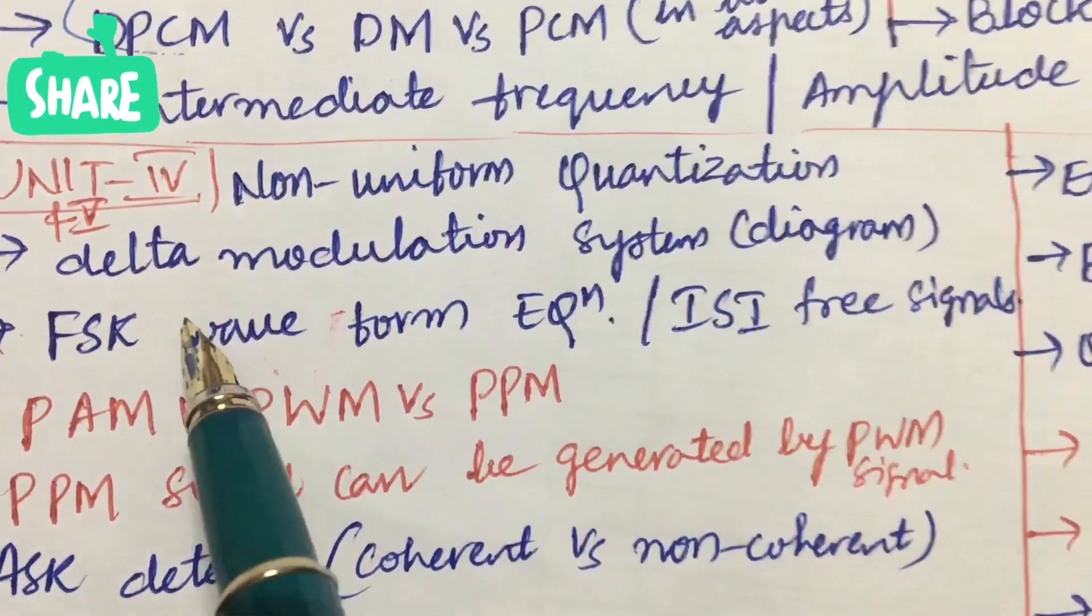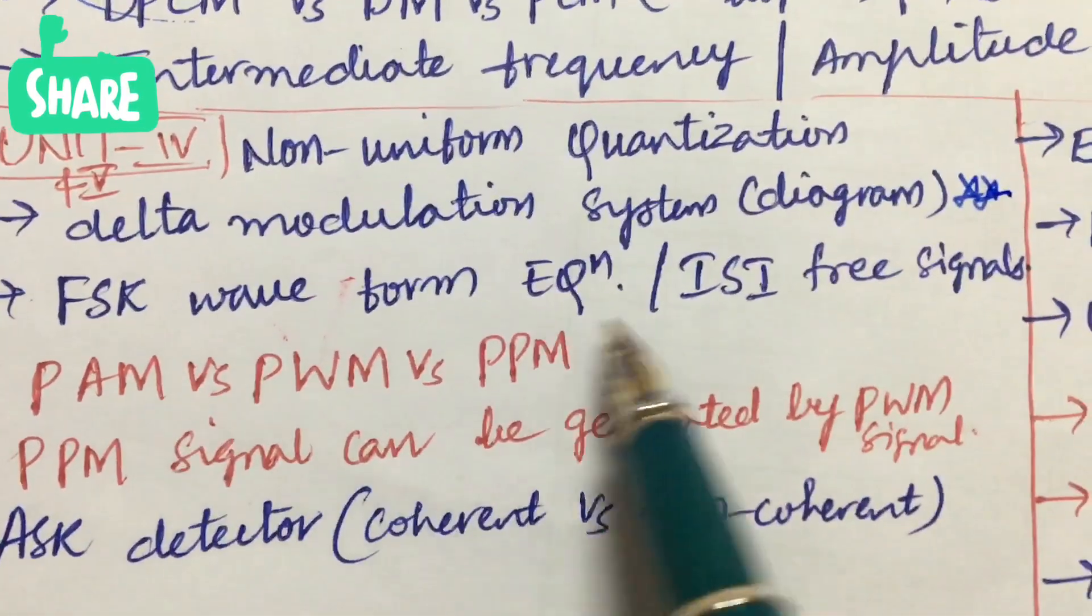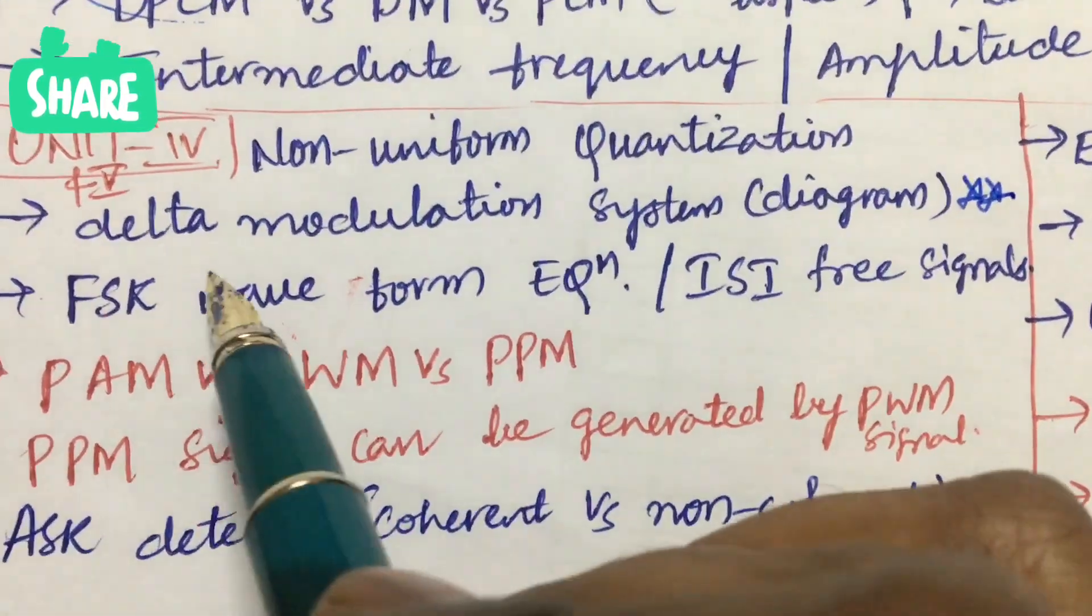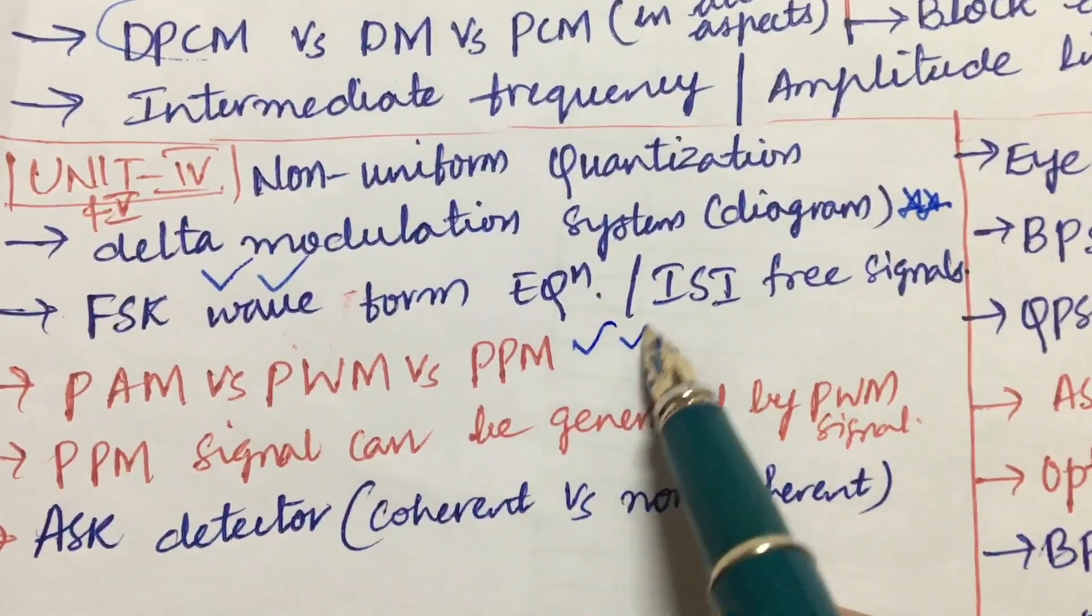Non-uniform quantization delta modulation system along with the diagram is also one of the gunshot questions. FSK waveform, equation, ISI free signals, FSK waveform I can expect this time.